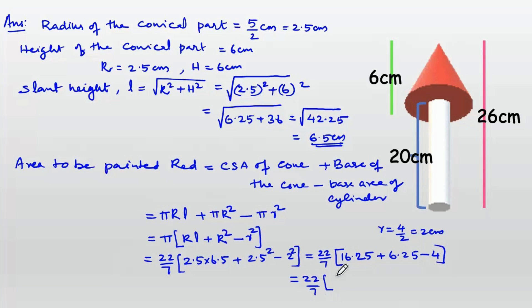This equals 22/7 into 16.25 plus 6.25 is 22.5 minus 4 equals 22/7 into 18.5 equals 407 divided by 7 equals 58.14 cm².